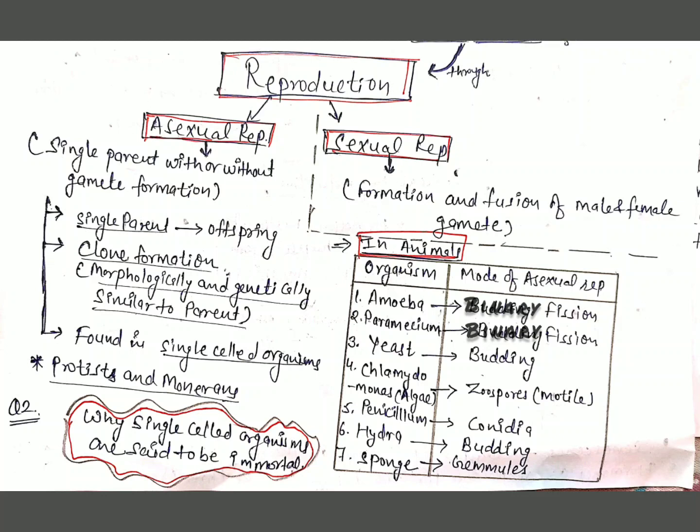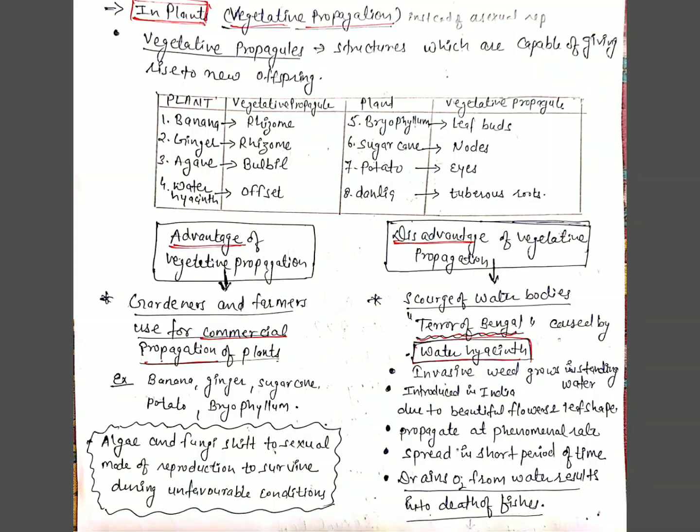Here you can see a table with the name of the organism and their mode of asexual reproduction or asexual reproductive structures. Amoeba and Paramecium reproduce through binary fission; yeast through budding; Chlamydomonas through motile zoospores; Penicillium through conidia; Hydra through budding; and sponges through gemmules.